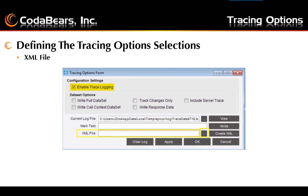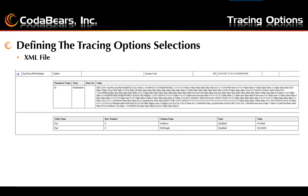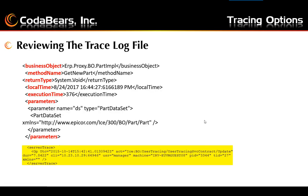You can optionally also choose to output the log file as an XML file. You can manually enter a path or click the browse button next to the XML text box and choose a location for the XML file. Then click the create XML button after you complete the tracing. This picture shows an example of an XML file tracing log. This is a trace of the part update trace. At the top you can see the dataset, which includes all the different fields; what was changed was the unit price and the net weight. The state is modified and then shows what they were modified to.